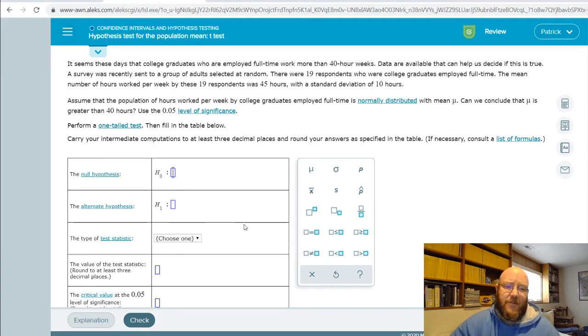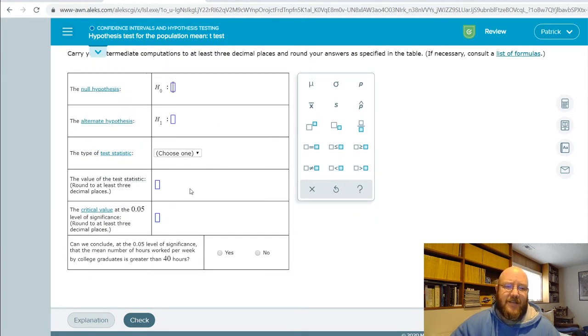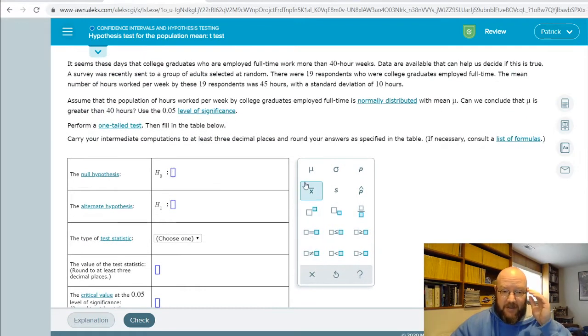So same drill as before: we're going to build our hypotheses, pick the test statistic, calculate it, and then this one wants us to do crit value method, so you'll either do the crit value method or the p-value method to actually make a conclusion here. So here we go.